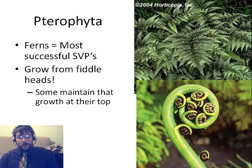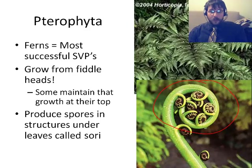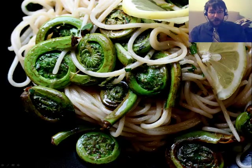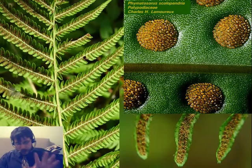These are ferns — the pterophytes. You see these everywhere; they're the most successful seedless vascular plant. They grow out of a cool structure called a fiddlehead — this curled-up stem at the top — and they unfurl from that as they grow larger. They have sori, little groups of structures that produce and hold all the spores, located underneath the leaves. Also, fiddleheads are apparently delicious to eat. Here's a picture showing the sori — each clump is full of spores that burst and are wind-dispersed.